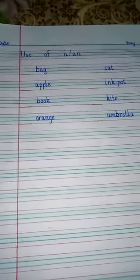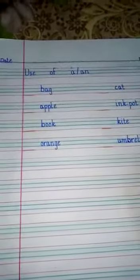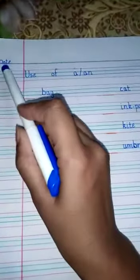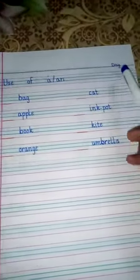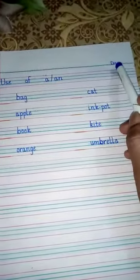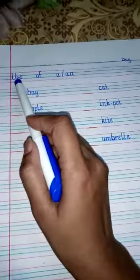How you have to start your work on your copies, like this: first you have to write date, then come to this side and write day, then come to the next line, write the topic 'Use of a/an', full stop.